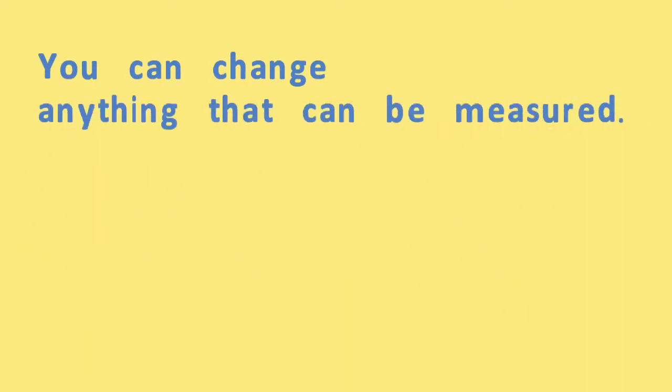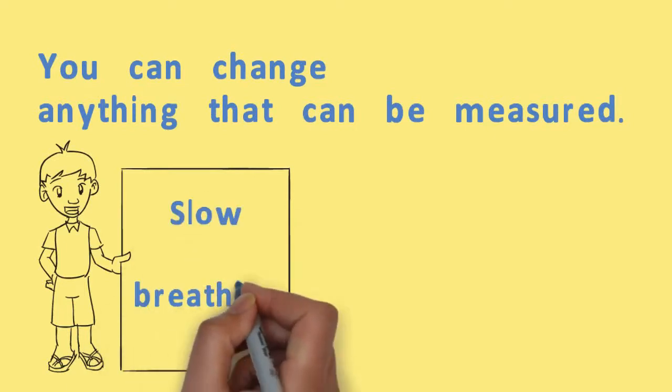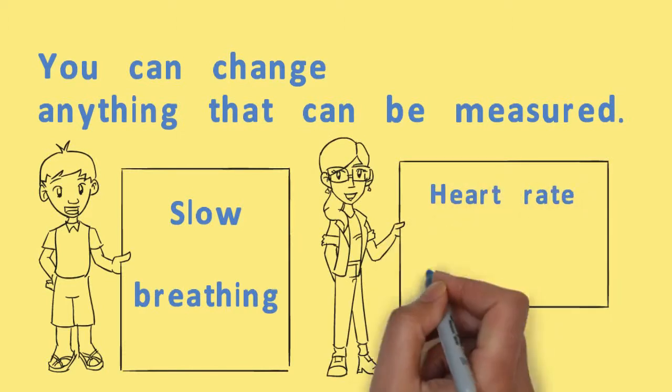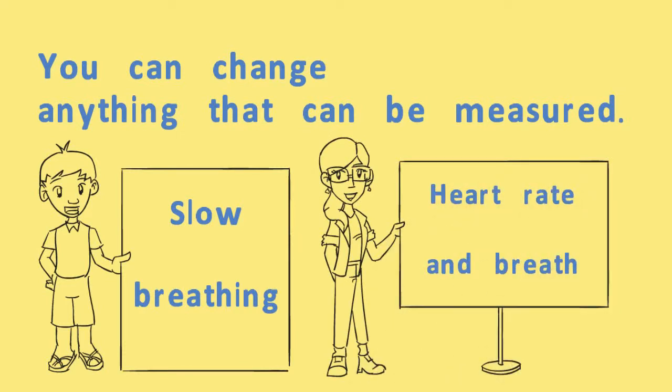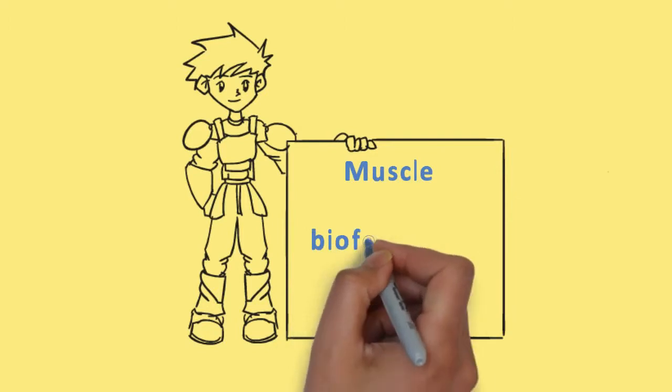The most common types of biofeedback are breathing, being able to slow your breathing down, something called heart rate variability that measures a heart rate measure that combines both heartbeat and breathing. There is muscle biofeedback which is called EMG.